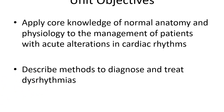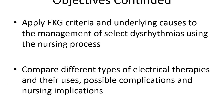Let's look at our unit objectives. Apply the core knowledge of normal anatomy and physiology to the management of patients with acute alterations in cardiac rhythms. Describe methods to diagnose and treat dysrhythmias. Apply EKG criteria and underlying causes to the management of select dysrhythmias using the nursing process. Compare different types of electrical therapies and their uses, possible complications, and nursing implications.